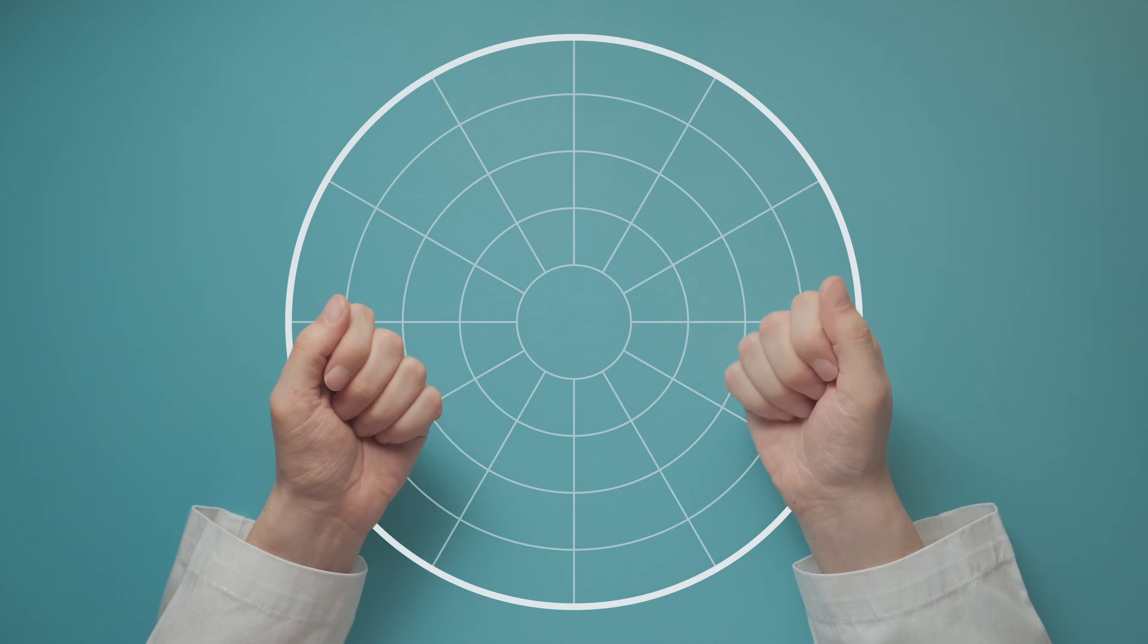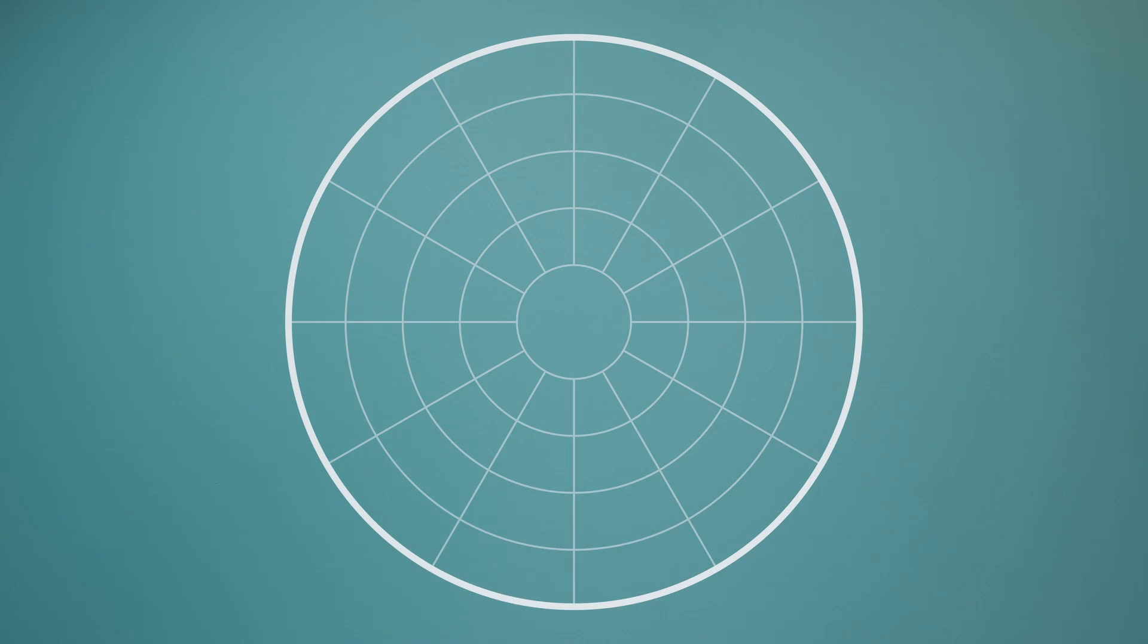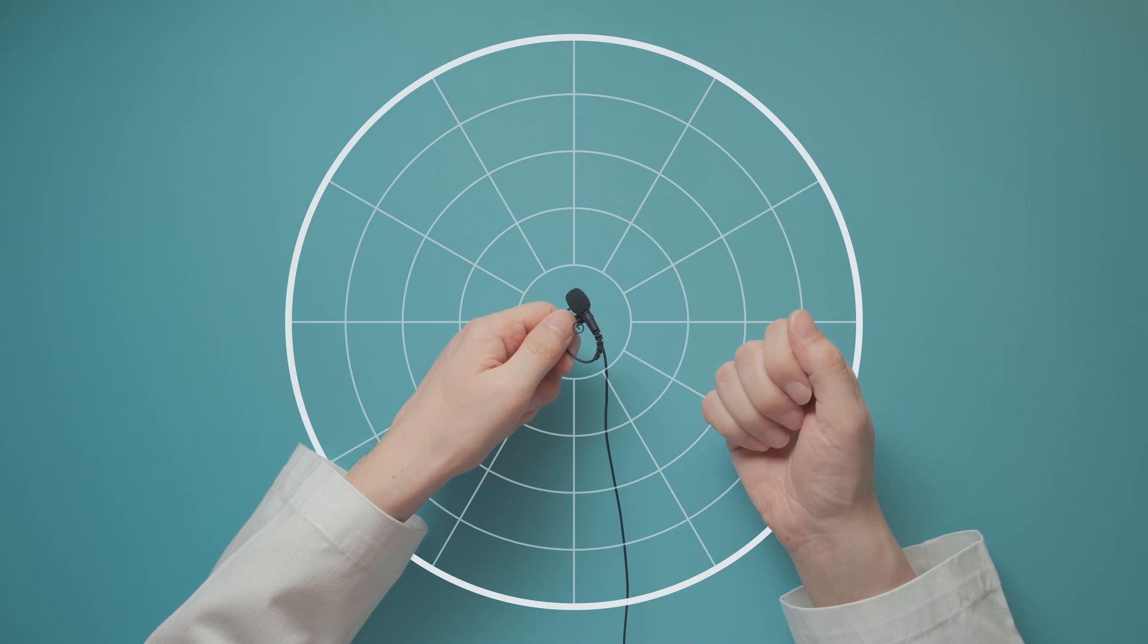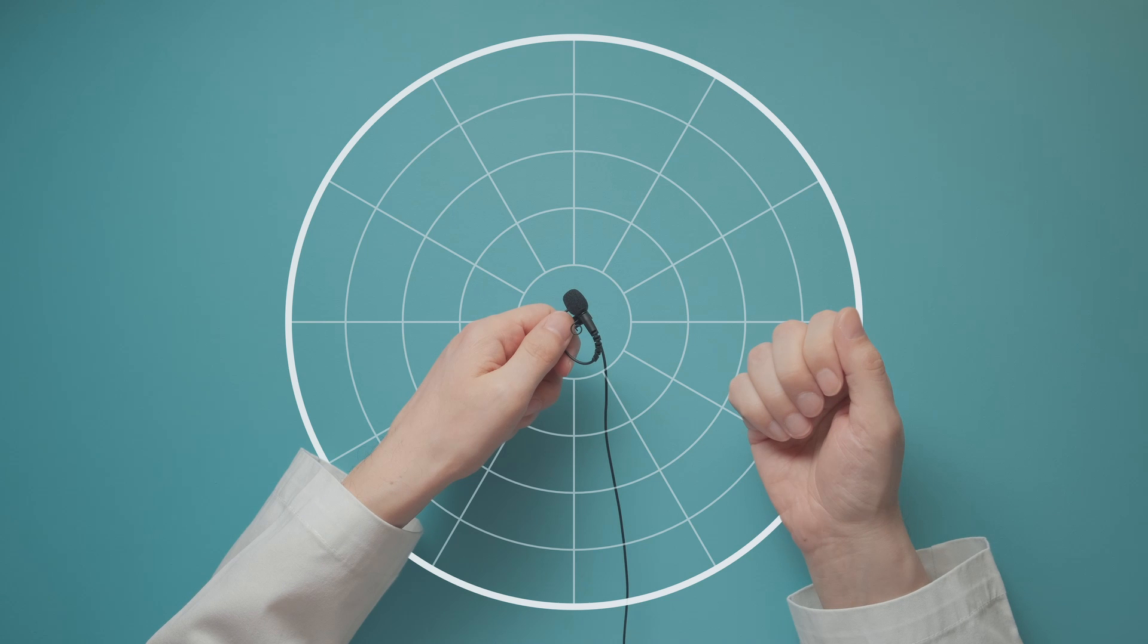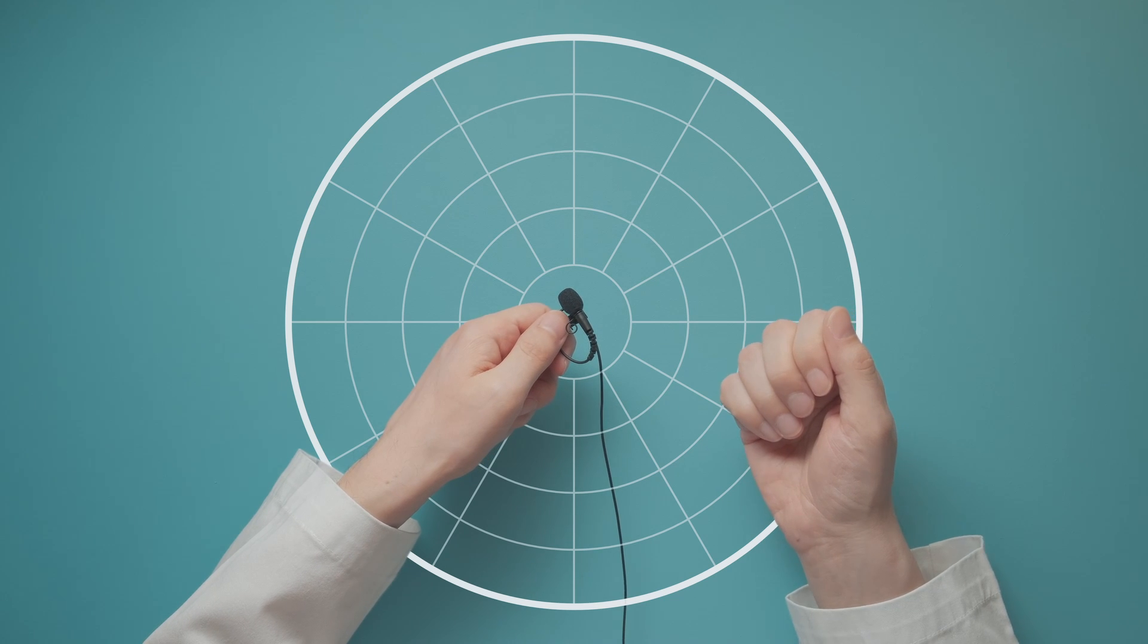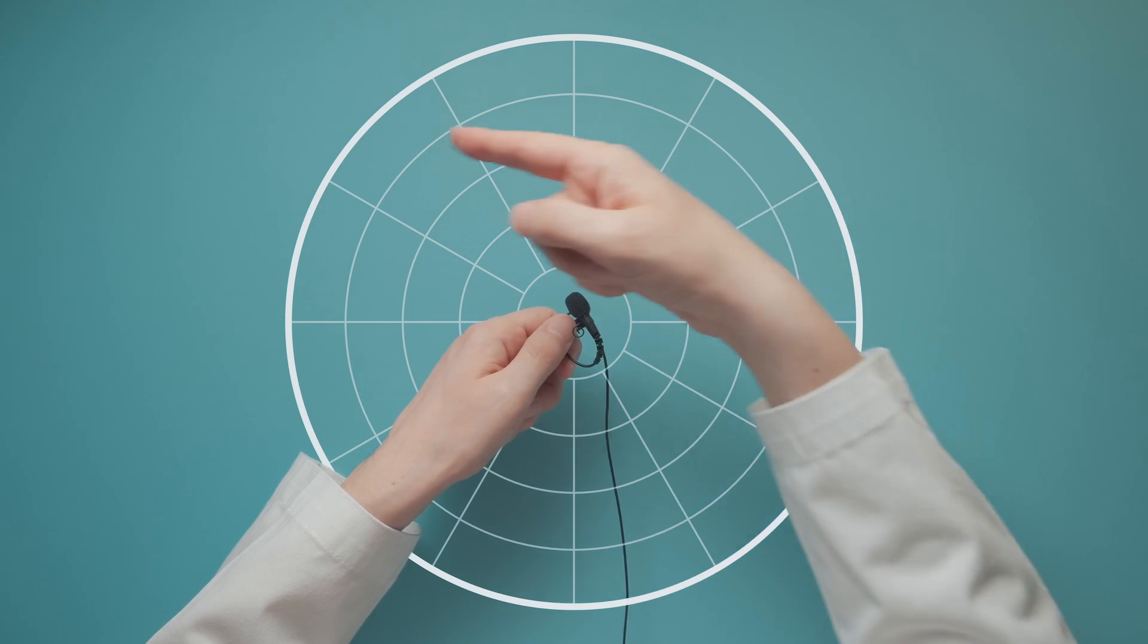Omnidirectional is also ideal when your sound source moves around the microphone a lot. These small lapel or lavalier mics are attached to a speaker's clothing near their chest. They are omnidirectional mics as well, since you need to clearly hear the person even if they turn their head from side to side.